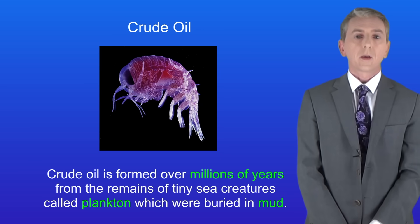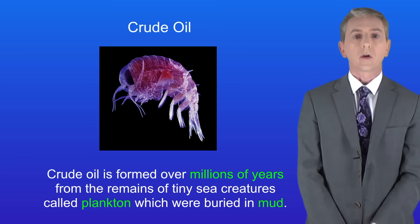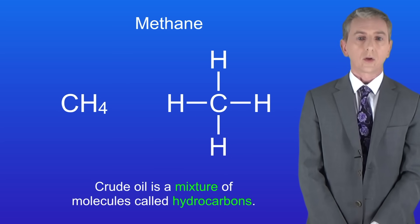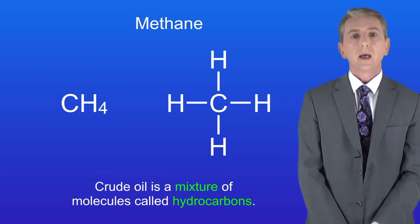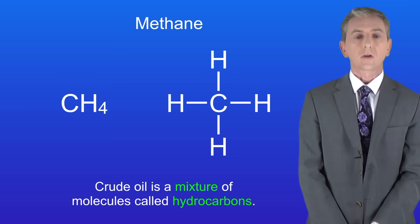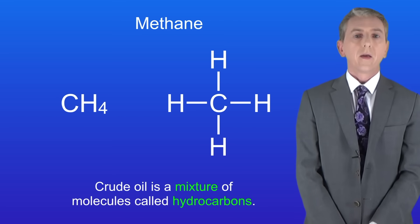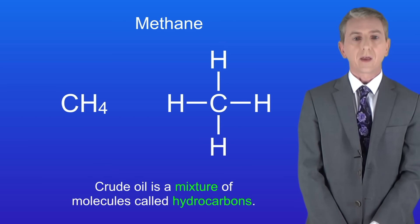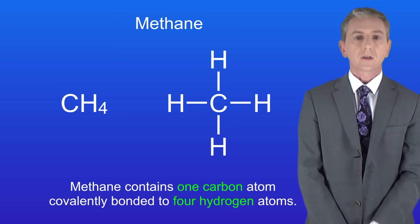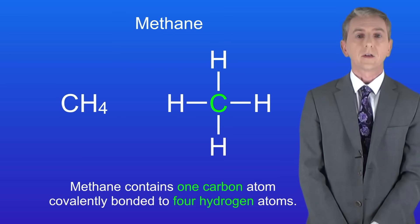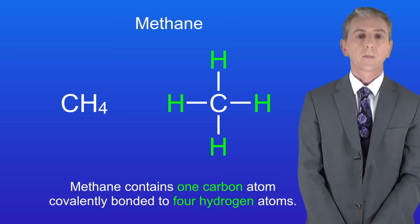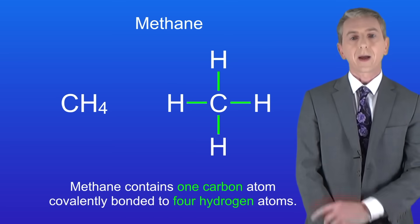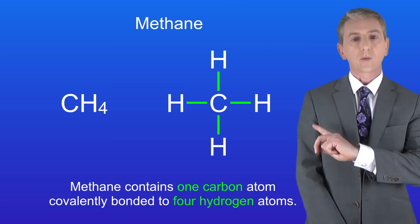In this video we're going to look at the molecules that we find in crude oil. Crude oil is a mixture of molecules called hydrocarbons. I'm showing you here one of the hydrocarbons in crude oil. This hydrocarbon is called methane and it has the formula CH₄. We can see that methane contains one carbon atom covalently bonded to four hydrogen atoms.